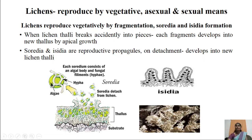The second vegetative propagule observed in lichen reproduction is isidia. Isidia are small finger-like, wart-like structures developed on the upper surface of the lichen thallus, provided with a small constriction on their lower side. Due to this constriction, it is easy to detach the isidia from the mother lichen thallus.